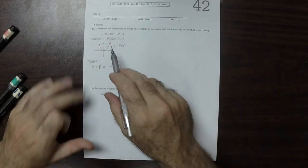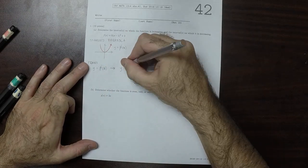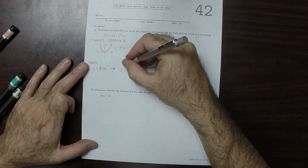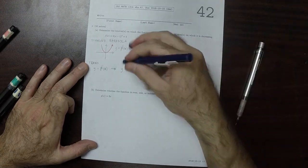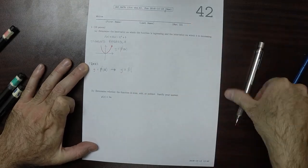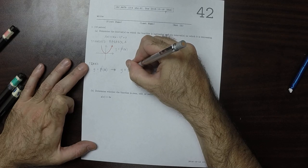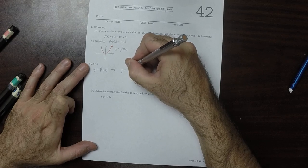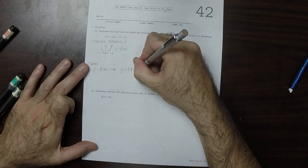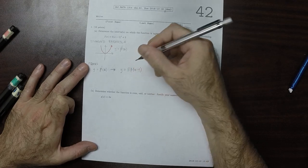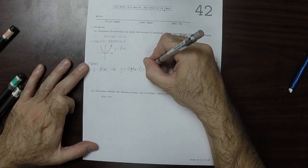So y is p of x transforms to y is 5. And then y is 5, p of x minus 1, like so, and then plus 3.